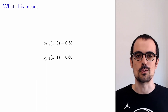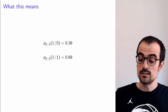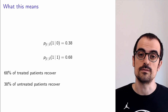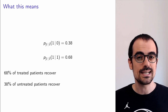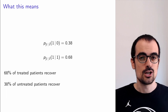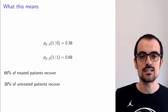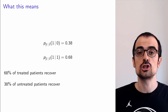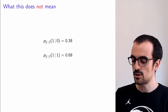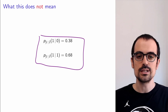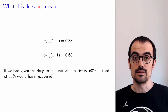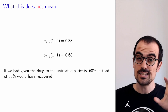This forces us to think more deeply about what these conditional probabilities actually mean. What they do mean is that 68% of the treated patients recovered and 38% of the untreated patients recovered. But does this really capture the causal question — does this drug actually work? Not really, because there's a distinction between this and asking what would have happened to the patients that were not treated if they were indeed treated. These probabilities do not mean that if we had treated the untreated patients, 68% of them would have recovered instead of 38%.